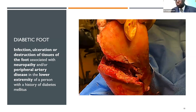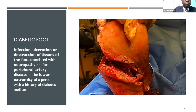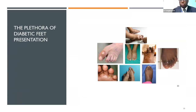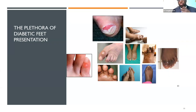A diabetic foot is an infection, ulceration, or destruction of tissues of the foot associated with neuropathy or peripheral arterial disease in the lower extremity in anyone who has diabetes or a history of diabetes. This captures a whole gamut of conditions. When we look at the plethora of diabetic feet, sometimes it's just a blister, and that alone portends a diabetic foot.